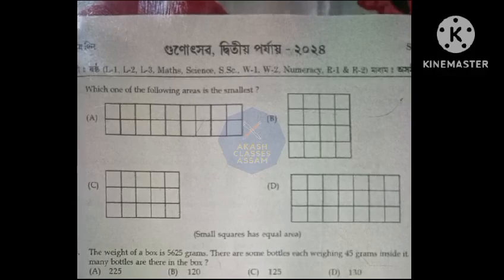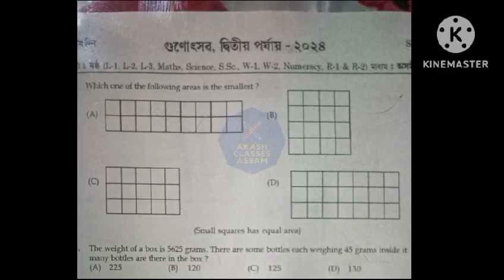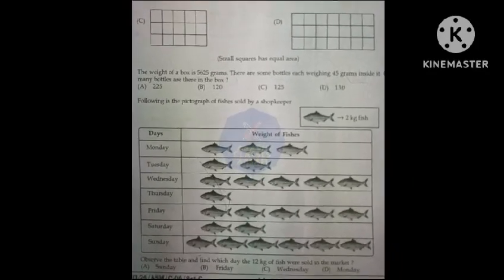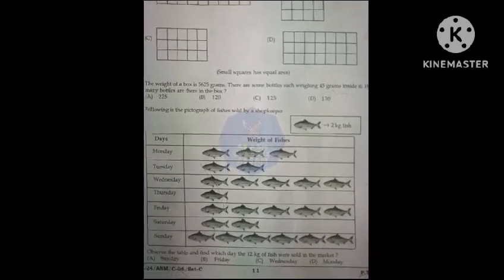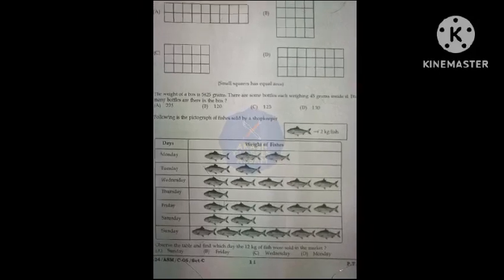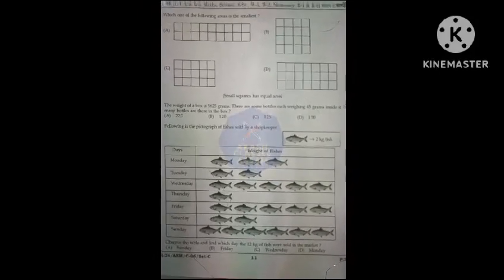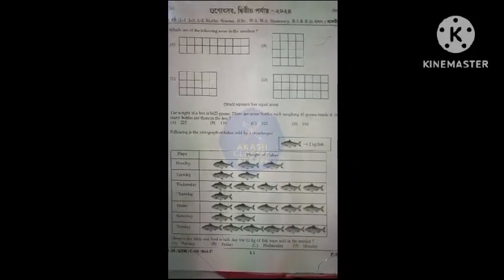5625 grams divided by 45 grams. Observe the table and find which day 12 kg of fish were sold in the market. Option D.